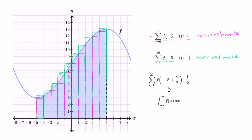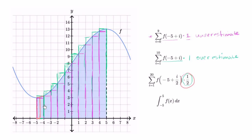Now let's think about this third expression. We're going to start at i equals one and go to 20, and it looks like we're going to do rectangles of width one-half instead of width one. Since we're starting at i equals one, these look like right-handed rectangles again. The first one is going to be negative five plus one-half, so f of that, which takes you right over there — and then you multiply it times the width, which is one-half. So now we have twice as many right-handed rectangles. It's still going to be an overestimate.